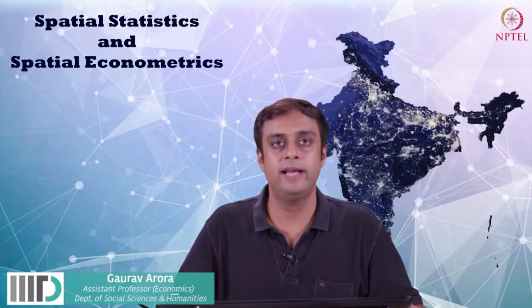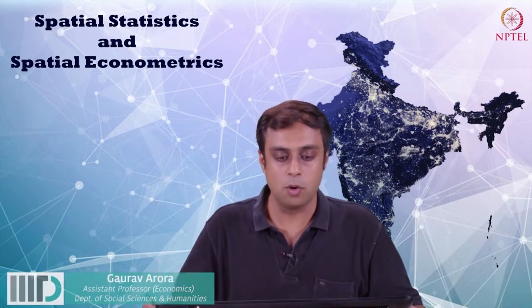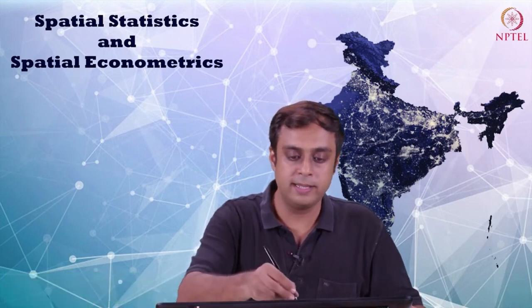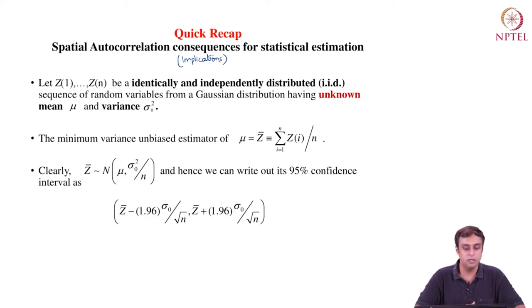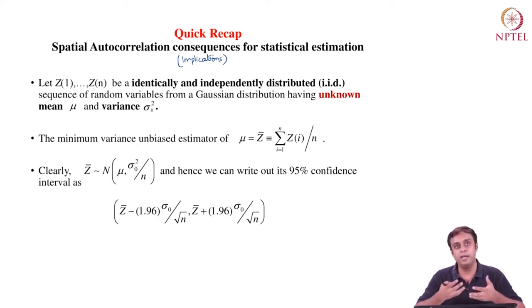Hello everyone. Welcome back to the ninth lecture of Spatial Statistics and Spatial Econometrics. In this lecture, we are going to do a quick recap of a very important topic that we started last time, which was the implications or the consequences of spatial autocorrelation for statistical estimation of mean and its confidence bands.